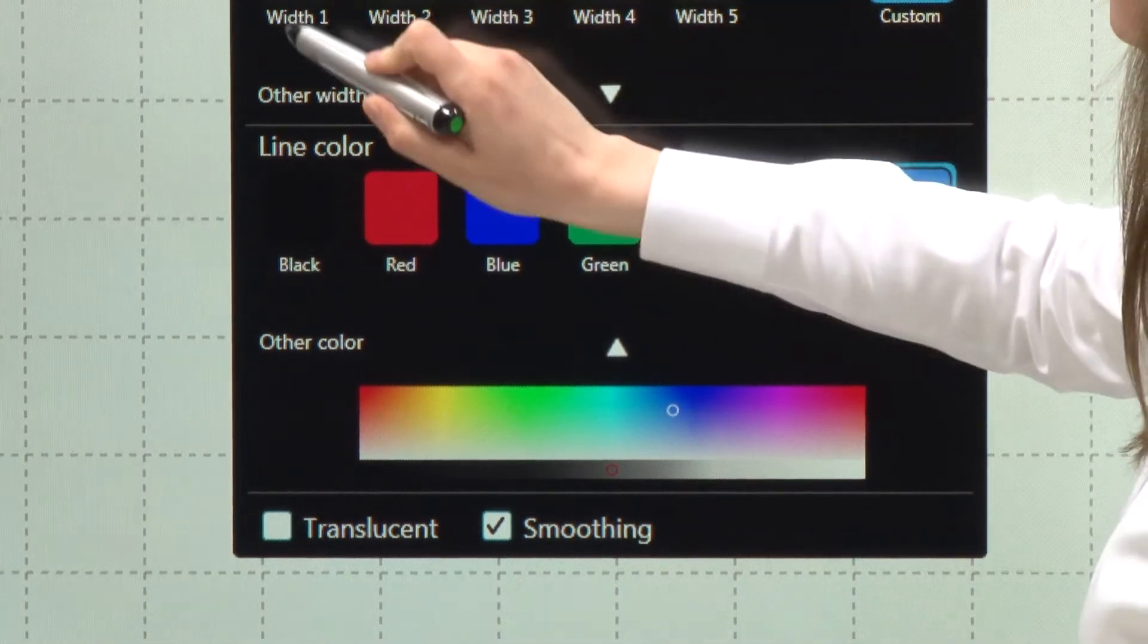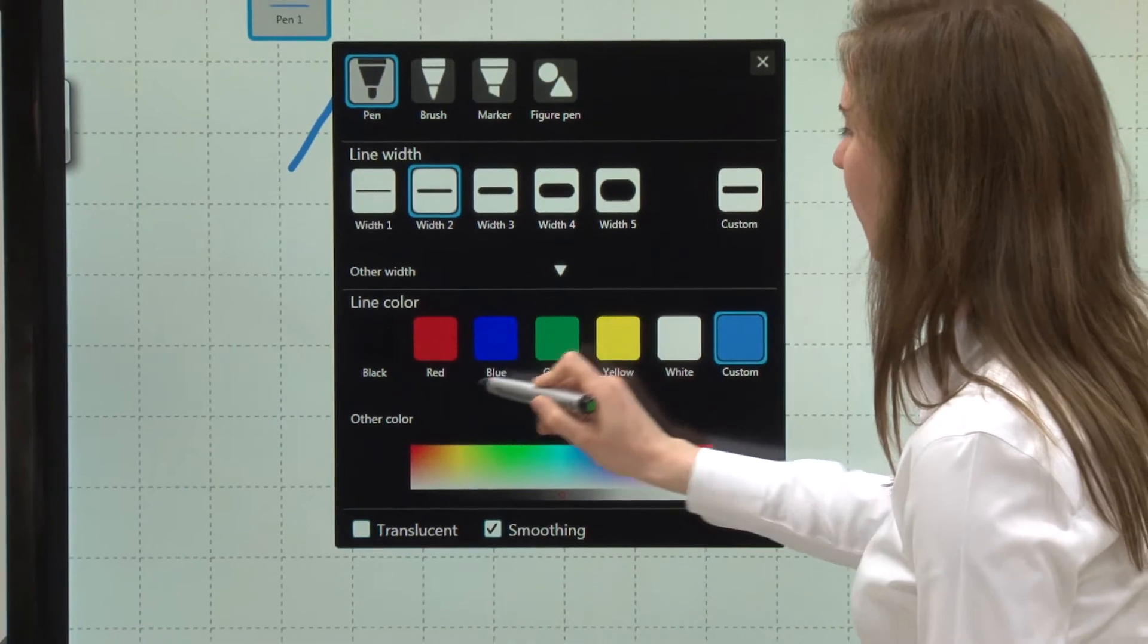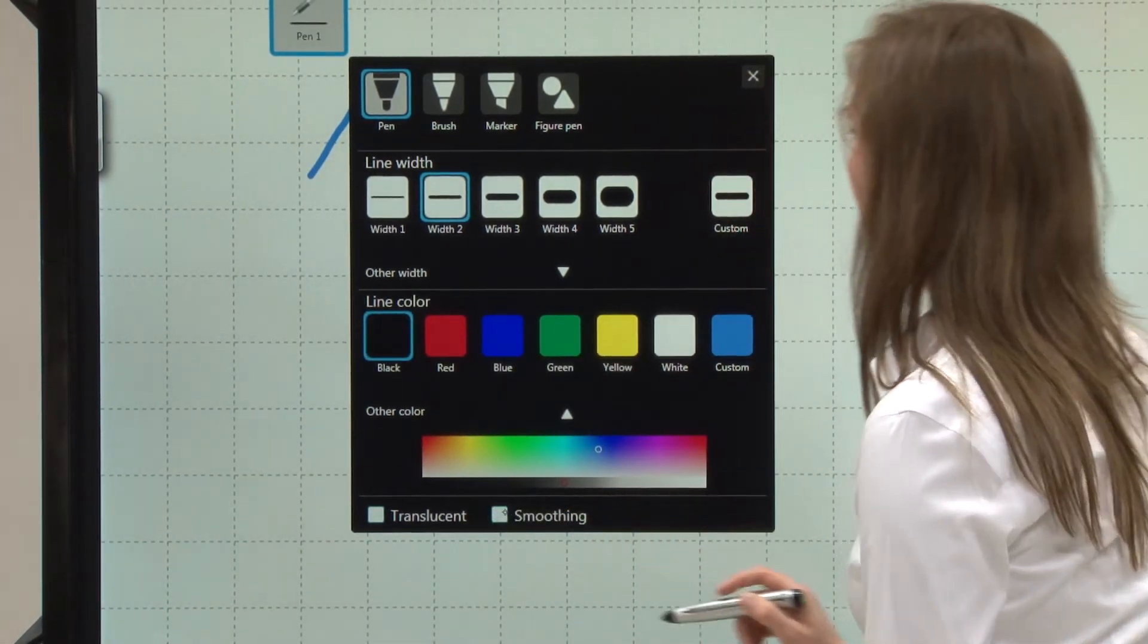Now in this case let's just choose Pen, width 2, black, and we're going to turn smoothing off.